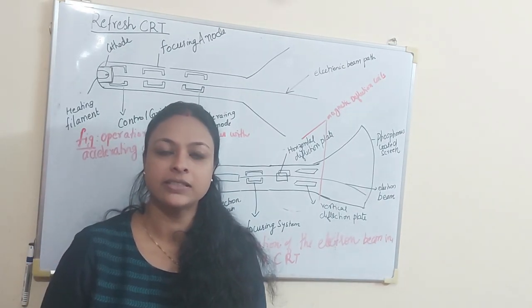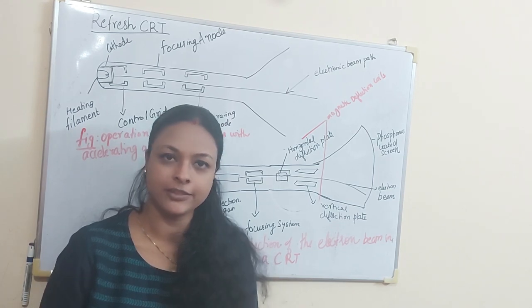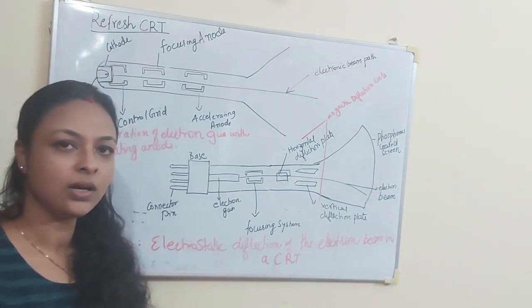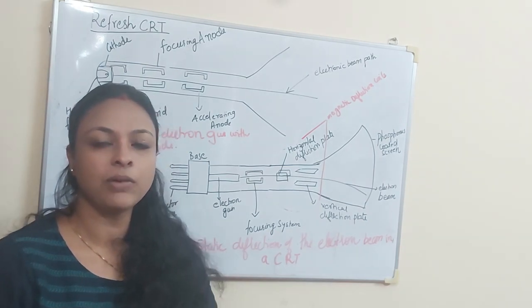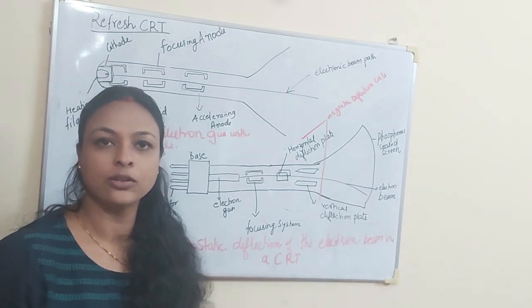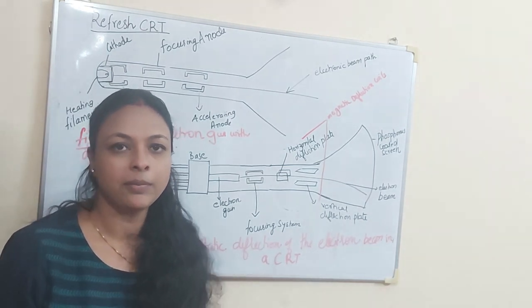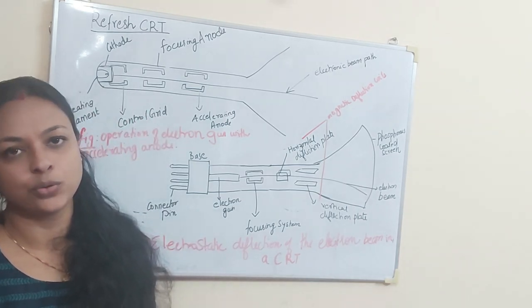Primary output device in a graphic system is always a video monitor. This cathode ray tube operation is used in our TV. TV is used in the monitors. The cathode ray tube is used in the monitors. How does this cathode ray tube work?